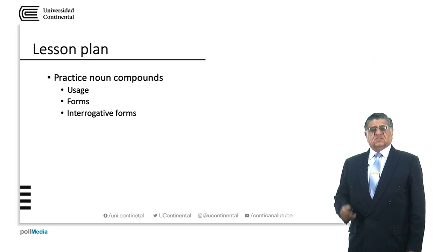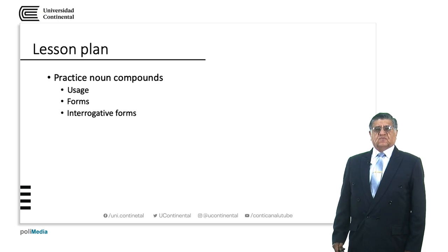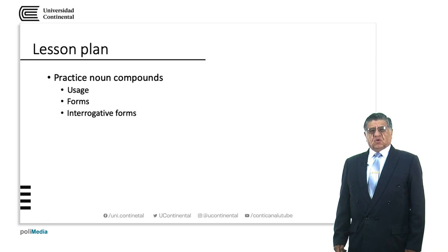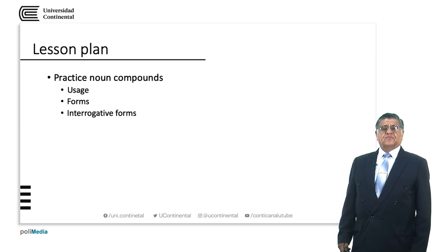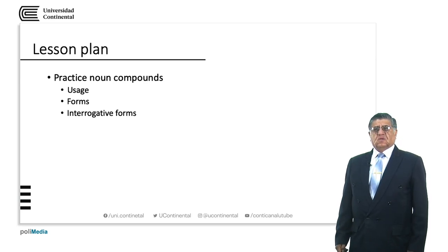One of the things I would like to emphasize is the usage of contractions. In formal English, in academic English, in technical English, we do not use contractions for written English. When you write a formal text, you do not need to use contractions. 'Don't' is not well accepted. You will probably need 'do not', 'will not', instead of 'won't'.